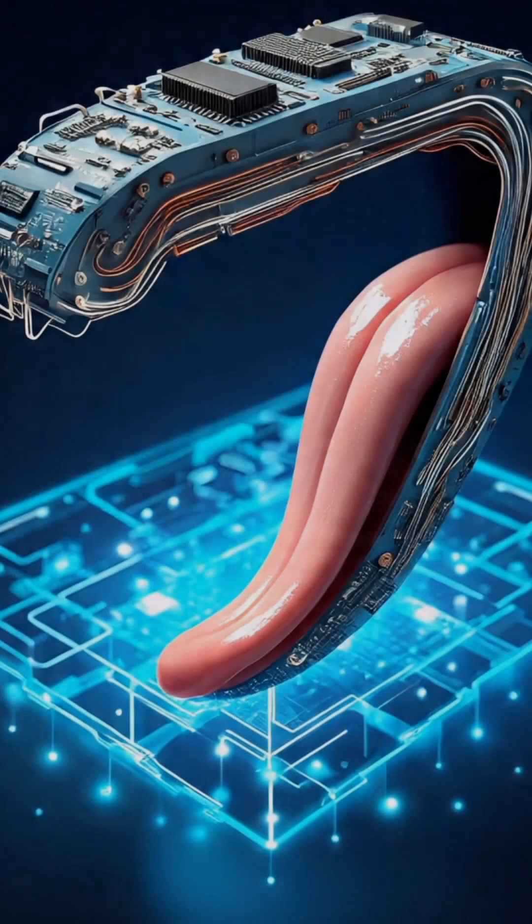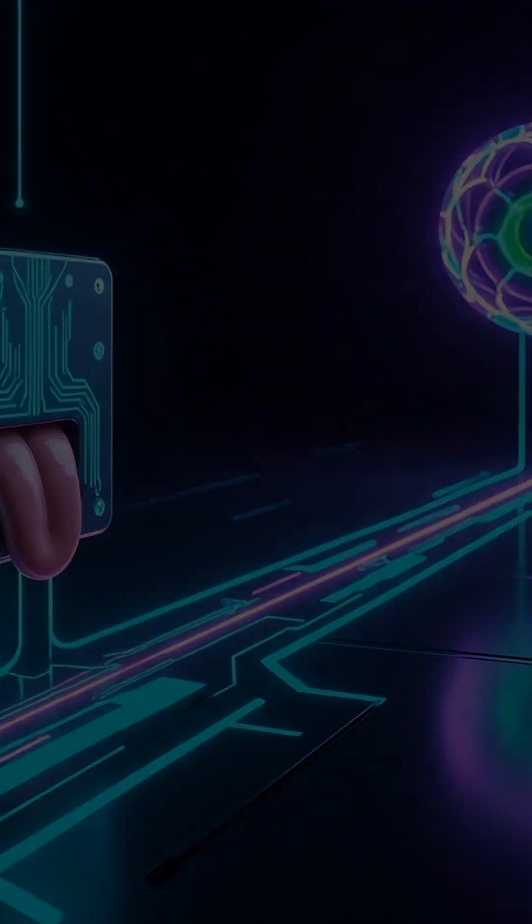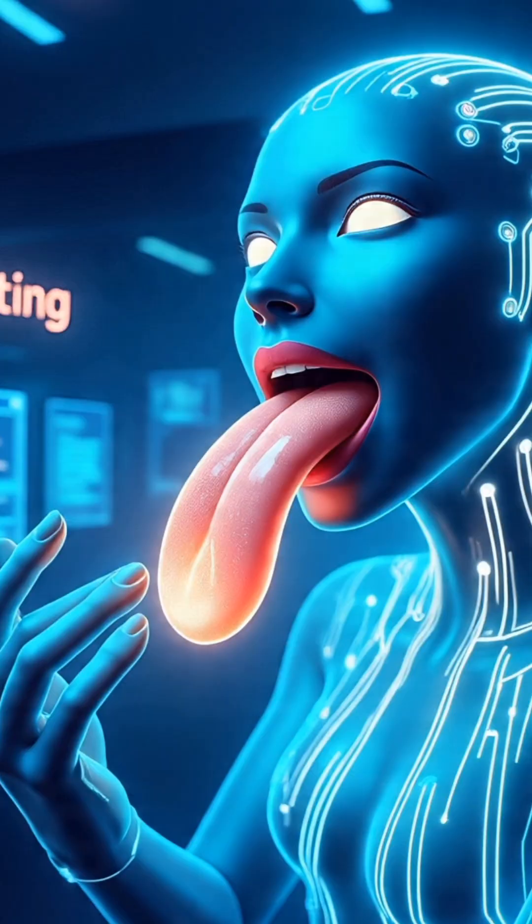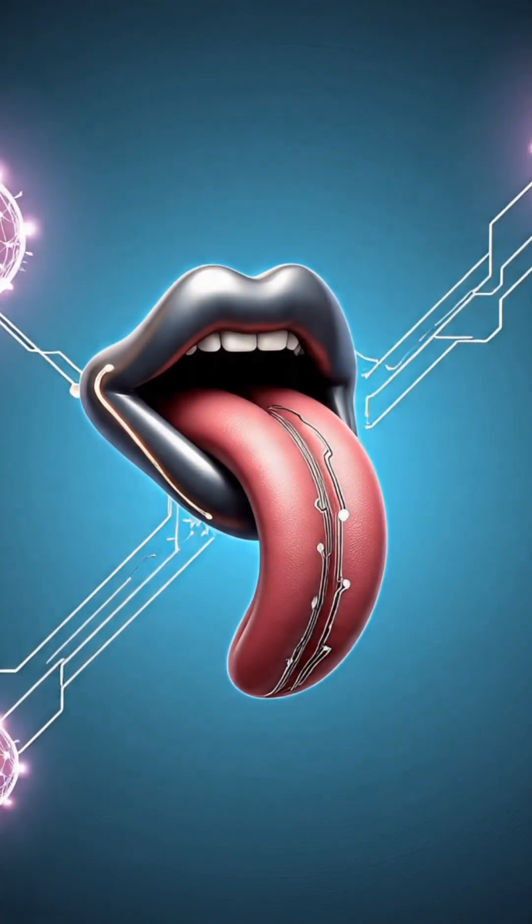Built using ultra-thin graphene oxide membranes, this neuromorphic sensor detects flavor ions, processes them in situ, and adapts over time.